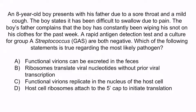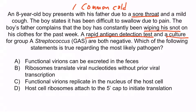Hopefully you noticed the symptoms describe a common cold — lots of mucus drainage, the dad complained of snot, and the boy had a sore throat, likely from post-nasal drip. We're not concerned about streptococcal infection since both the rapid antigen detection test and the culture were negative. Since this is the common cold, the most likely pathogen is rhinovirus — the most common cause of the common cold. After that, it's coronavirus.